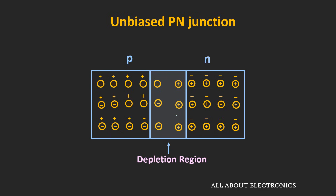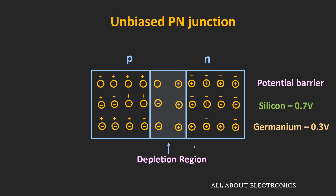The depletion region contains both positive and negative ions which are immobile in nature, and it also contains a few charge carriers which are thermally generated within it. These ions set up an electric field that points from the positively charged ions towards the negatively charged ions. Due to this electric field, only a few electrons from the n-side are able to cross the depletion region, and the same is true for holes on the p-side. These immobile ions create a barrier potential, also known as the built-in potential. For silicon, this built-in potential is 0.7V, while for germanium it is roughly 0.3V.